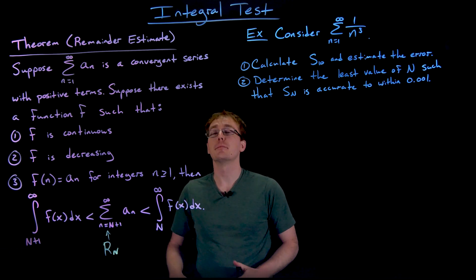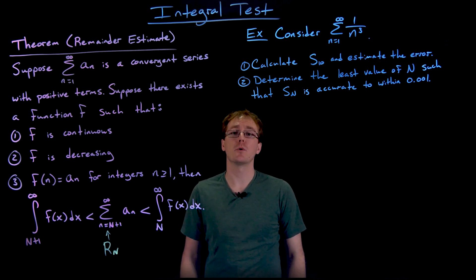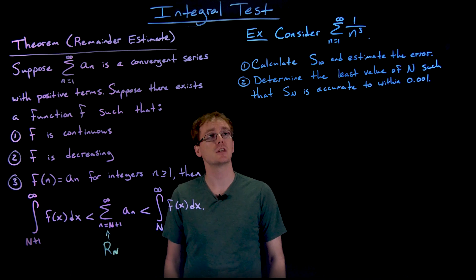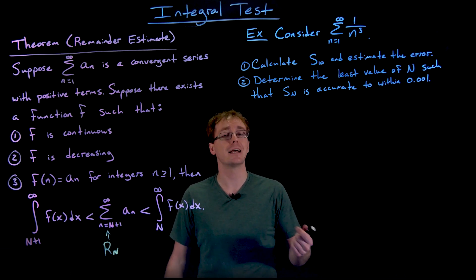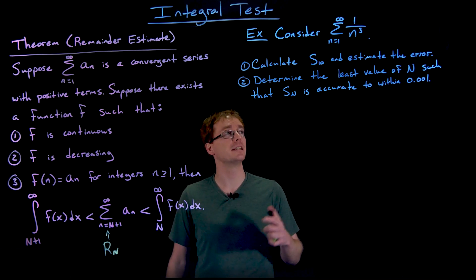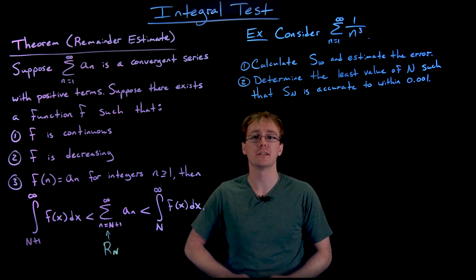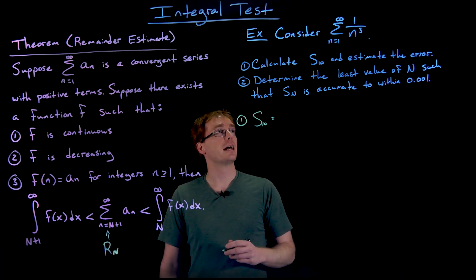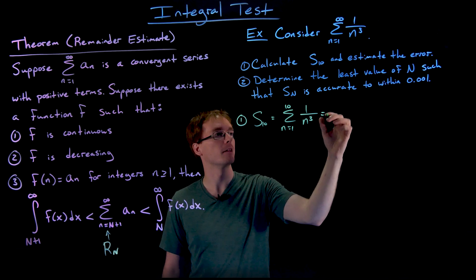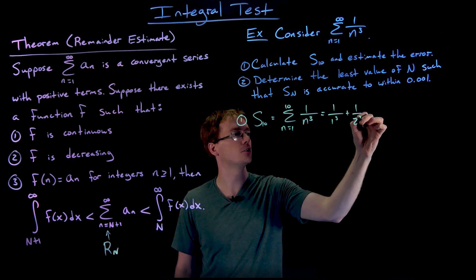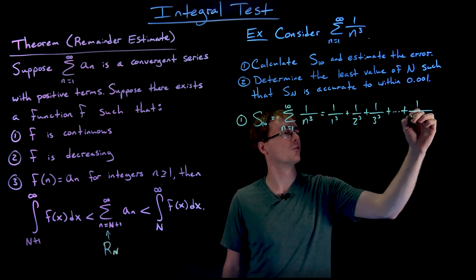Let's go ahead and test our remainder estimate theorem out. In this example we're going to consider the p-series — the sum from n equals 1 to infinity of 1 over n cubed. In part 1 we're going to calculate s sub 10, the partial sum of the first 10 terms, and then use our remainder estimate theorem to estimate the error. So s sub 10 is the sum from n equals 1 to 10 of 1 over n cubed — that's 1 over 1 cubed plus 1 over 2 cubed plus 1 over 3 cubed, and so on up to 1 over 10 cubed.